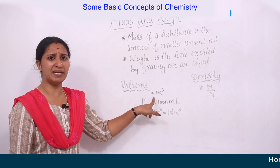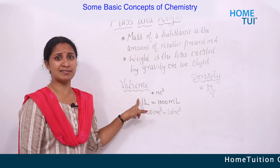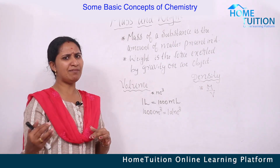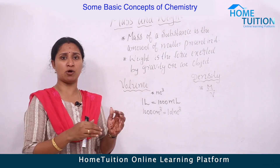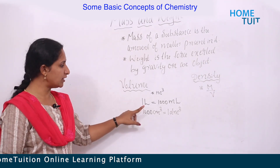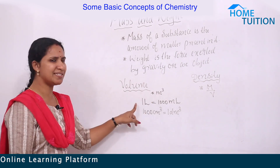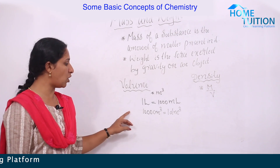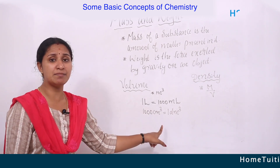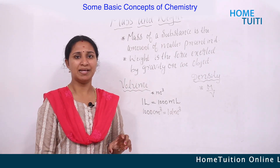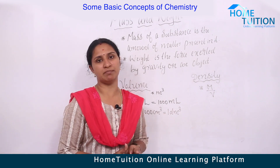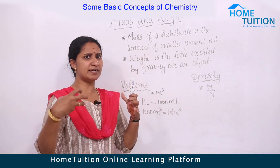Weight is the force exerted by gravity on an object. The SI unit of volume is meter cube (m³) — volume equals length × length × length. Normally we also use liters: one liter equals 1000 milliliters. Other common units include decimeter cube and centimeter cube, where 1000 cm³ equals one dm³.